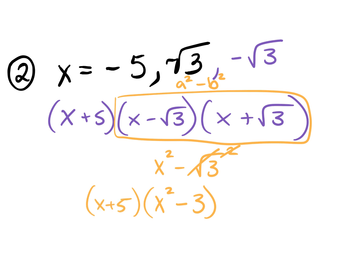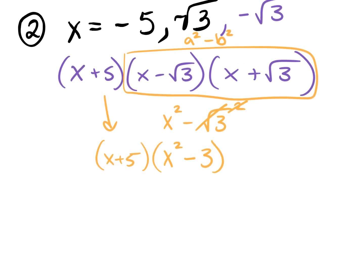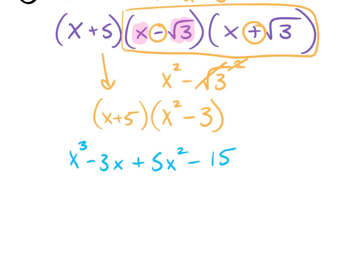Then we're multiplying x squared minus 3 by x plus 5. FOILing these two together gives us x to the third power minus 3x plus 5x squared minus 15. There are no like terms to combine, but I do need to put it in standard form and name it. So f of x equals x to the third power plus 5x squared minus 3x minus 15.